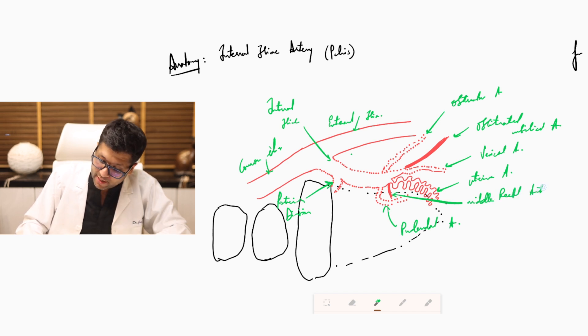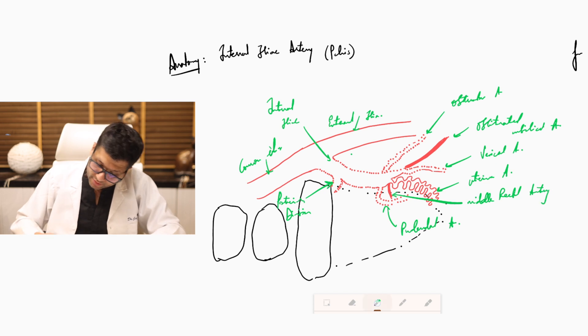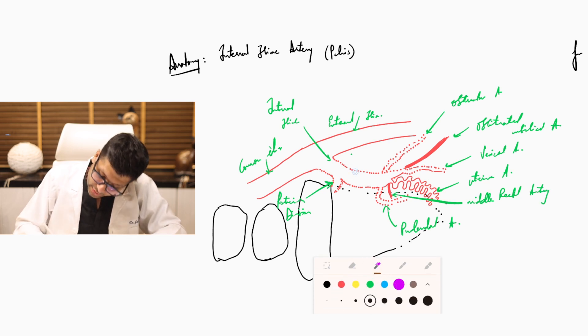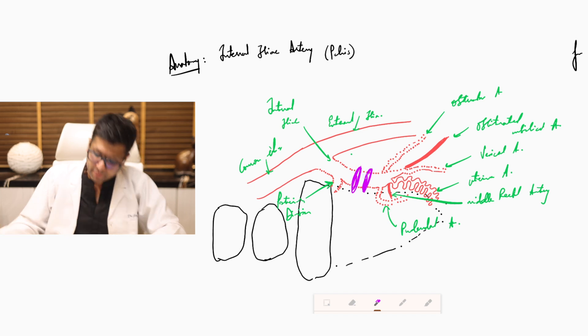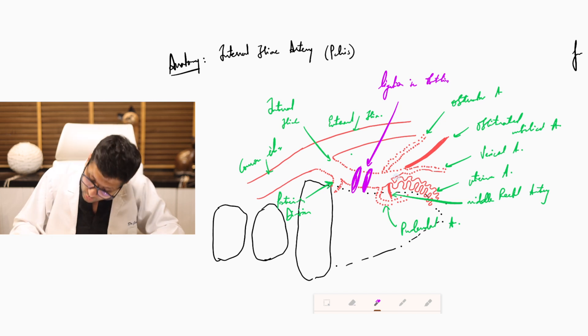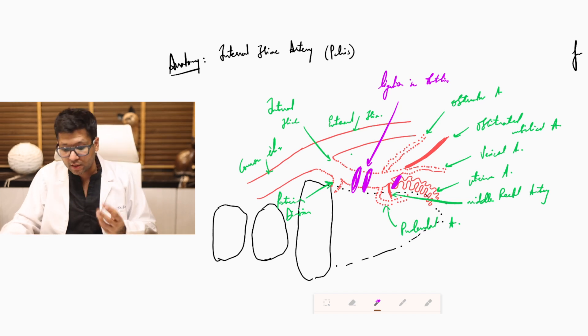Important to understand for students that whenever you are doing internal iliac ligation in obstetrics, the internal iliac ligation typically happens at the anterior division. This is where you are going to be doing your ligation in obstetrics. When you are doing uterine artery coagulation at origin, this is where it occurs.